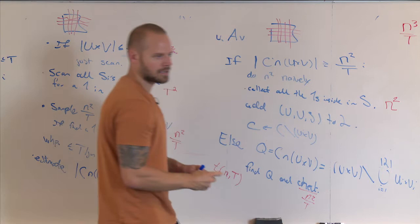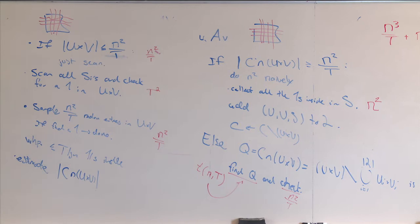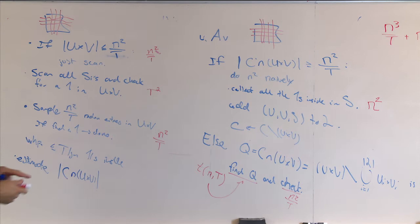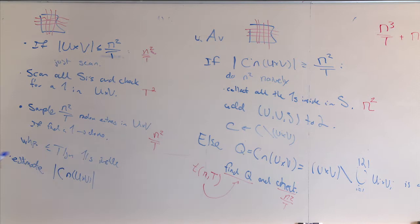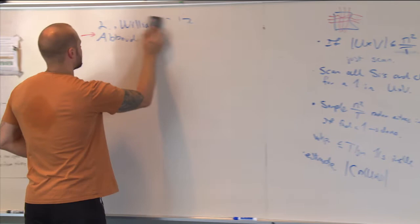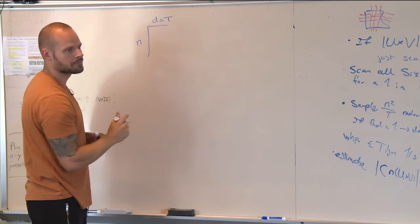What remains is how do we find set Q? We're basically going to solve this orthogonal vectors reporting problem. We have an instance of orthogonal vectors where we have N vectors, the dimension D is T (the length of the list L). The first set is U and the second set is V, dimension T. The query asks for all ones inside a submatrix — this is an N by T times T by N matrix product essentially — and we're promised there are at most N²/T of them.